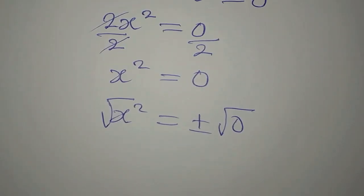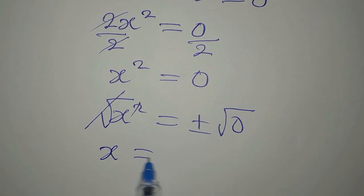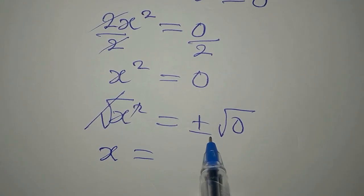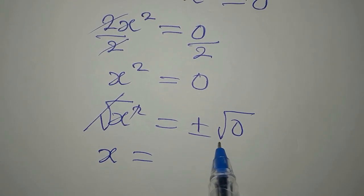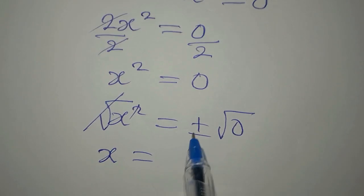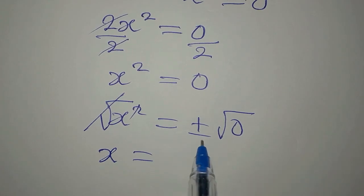So x is equal to square root of zero, which is zero. And there's nothing like plus or minus zero, so zero is zero. So this means that the value of x is just zero.